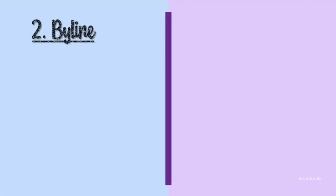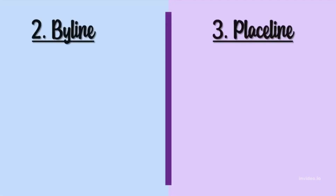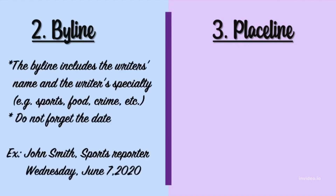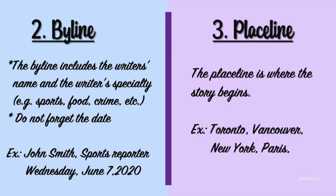Then we have the byline and the place line. The byline includes the writer's name and the writer's speciality, e.g. sports, food, crime, etc. Do not forget the date. For example: John Smith, sports reporter, Wednesday, June 7, 2020. The place line is where the story begins — e.g. Toronto, Vancouver, New York, Paris, etc.